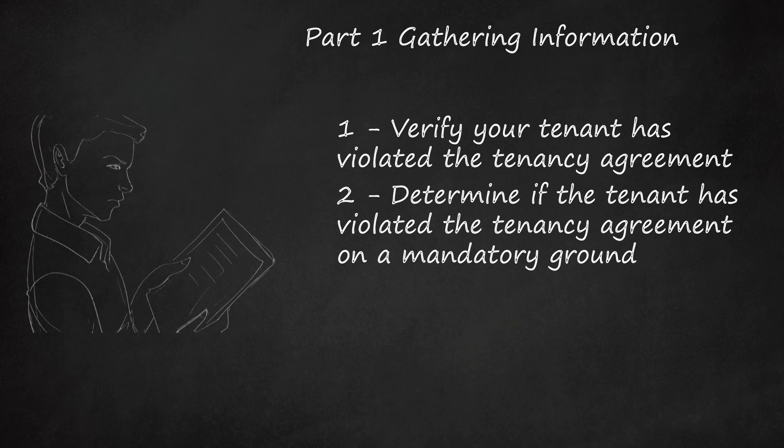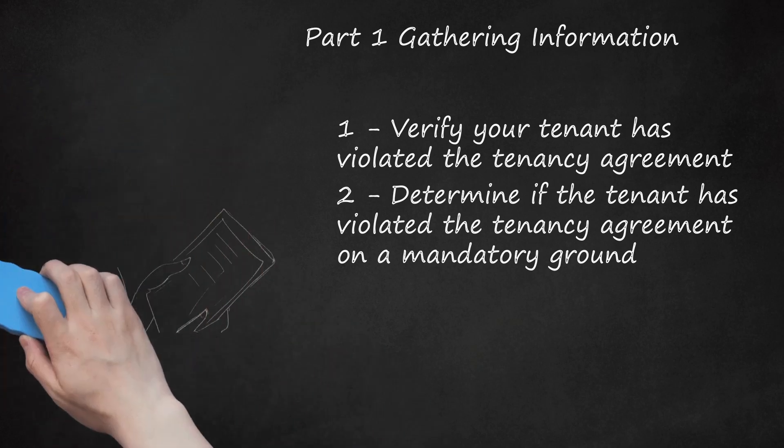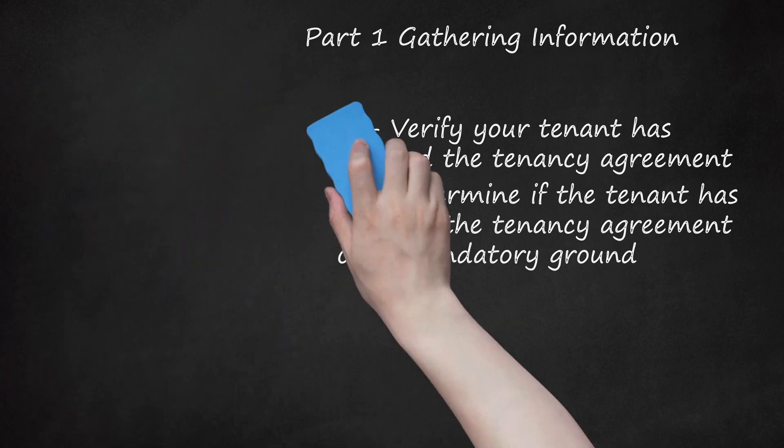Ground 8 is non-payment of rent. It is actionable if: rent is paid fortnightly and at least 8 weeks rent is owed; or monthly and at least 2 months rent is owed; or quarterly and 1 quarter or more rent is at least 3 months overdue; or yearly and at least 3 months rent is at least 3 months overdue.